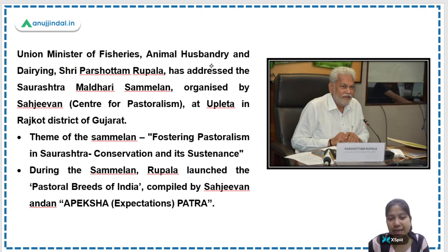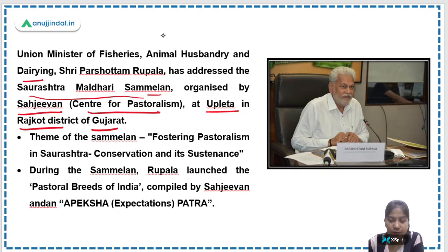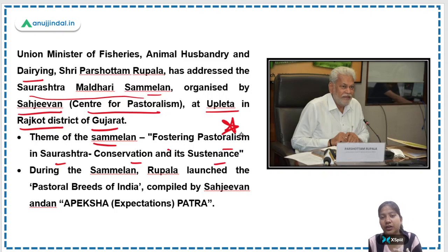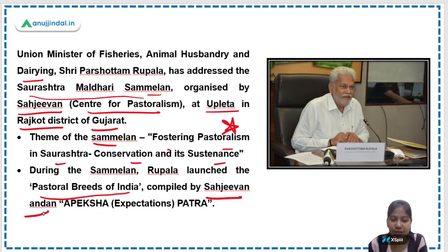The Halari donkey was in the news because the Union Minister of Fisheries, Animal Husbandry and Dairying addressed the Saurashtra Maldhari Sammelan organized by Sahajivan — the Centre for Pastoralism — at Upleta in Rajkot district of Gujarat. The theme was 'Fostering Pastoralism in Saurashtra: Conservation and its Sustenance.' A book titled 'Pastoral Breeds of India,' compiled by Sahajivan, was released at the Sammelan by Purshottam Rupala.